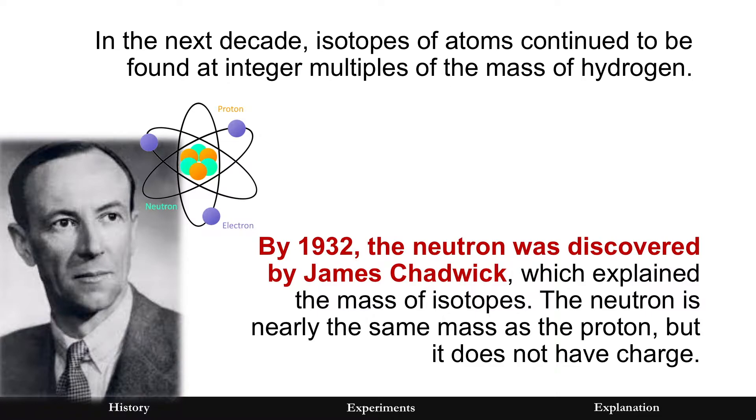There are problems over the next decade. Isotopes of atoms were found at integer multiples of hydrogen, which meant that there was something else in the nucleus that didn't have a positive charge like the proton and probably had roughly about the same mass. And so in 1932 the neutral neutron was discovered by James Chadwick.